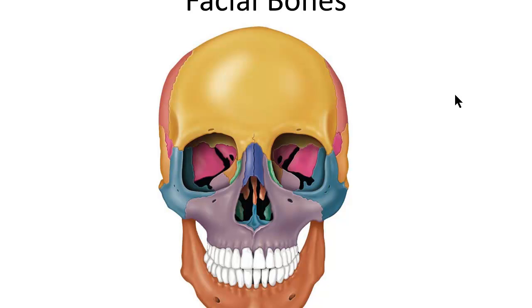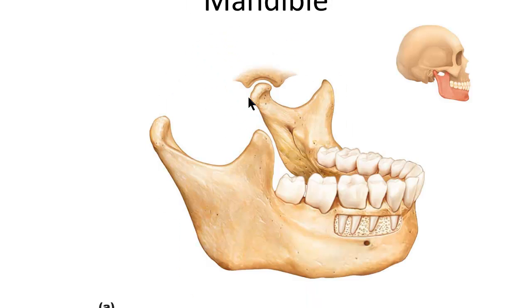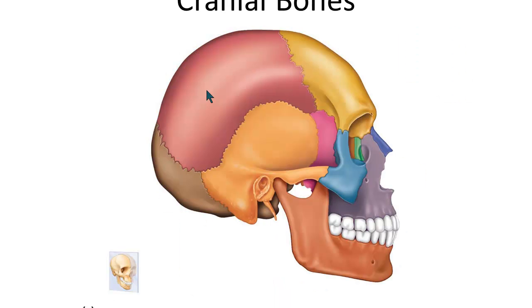That concludes the facial bones. Be sure you can identify the different bones of the skull. Here's a nice view of the frontal bone, the parietal bones on each side, and a little of the temporal bone. Some views are better than others at showing these bones. A posterior view would really show the occipital bone nicely. Each of these flat bones of the skull is outlined by sutures, which serve as borders between the different flat bones.